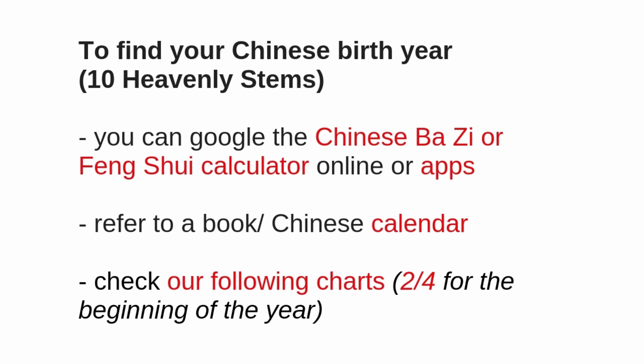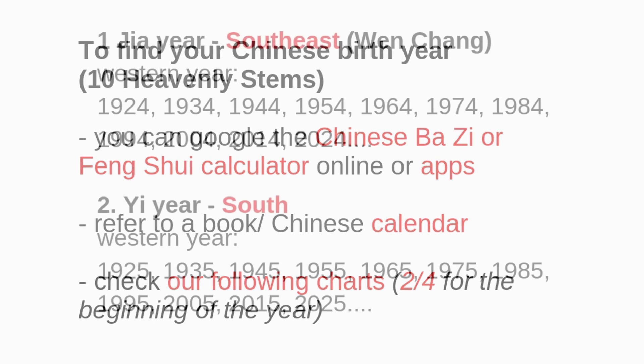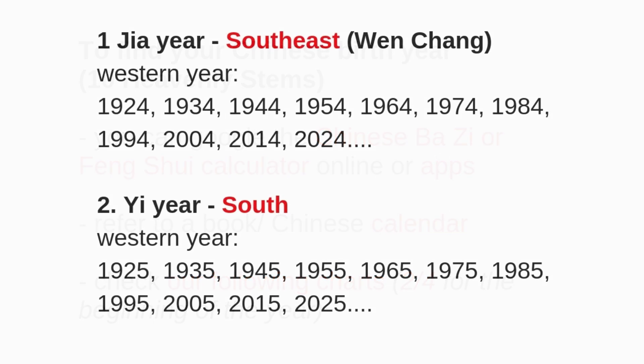One thing to remember is that the beginning of the Chinese year is considered February 4th in the Western calendar, because it is the Lichun, or the beginning of spring, in the old Chinese calendar. The first chart is the Jia-Hai year, and the Wenchang location is in the southwest.